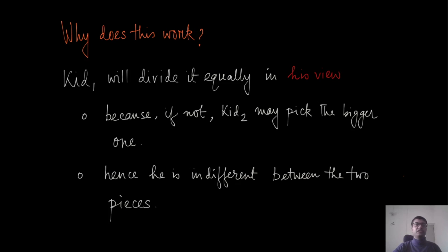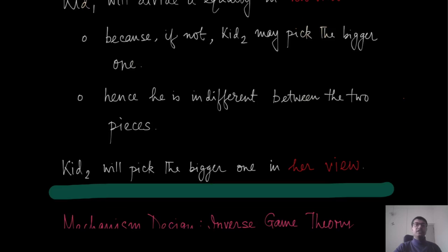If you think carefully, kid one will divide the cake exactly equally in his own view, because if he does not do that, he risks losing the larger piece. Therefore, after the cutting, kid one will be indifferent between the two pieces — he is happy with either. Kid two will also be happy because she picks the piece which is larger in her view. These two views could be different: for kid one the divisions are equal, but kid two gets whichever she thinks is the larger piece.